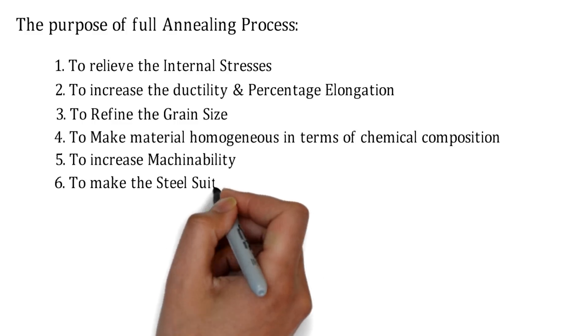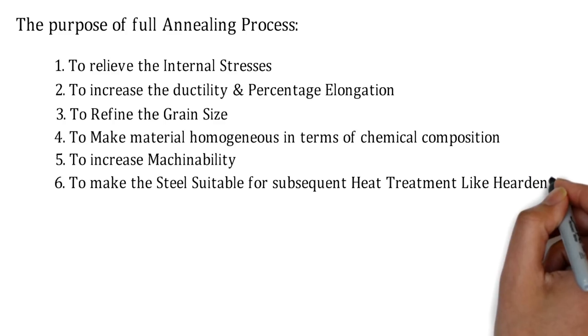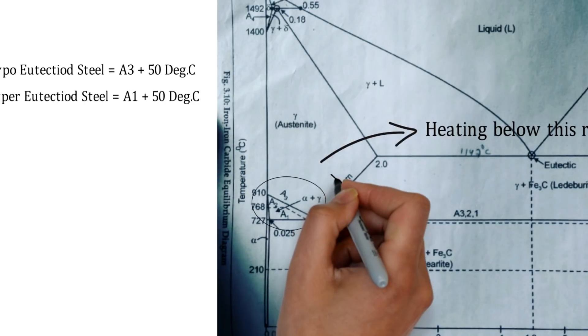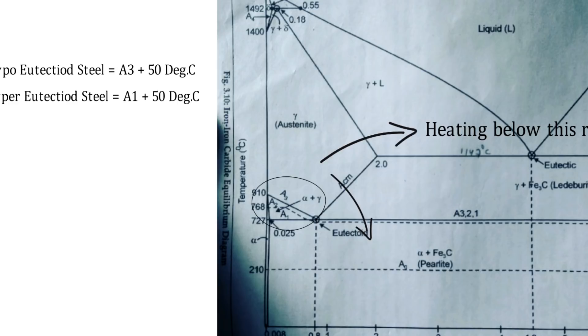There is also a sixth one: to make the steels suitable for subsequent heat treatment like hardening, which is generally carried out by annealing process. In this process, the austenite gets converted into coarse pearlite, which is nothing but soft steel.